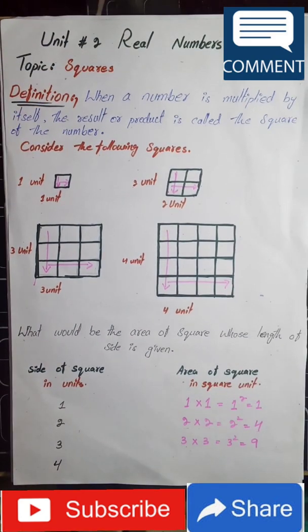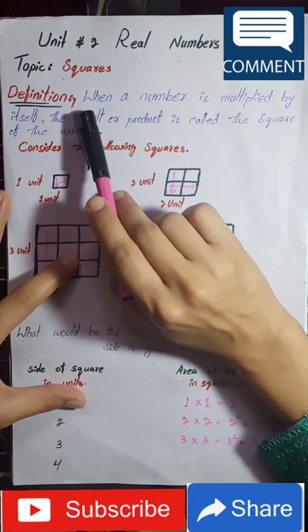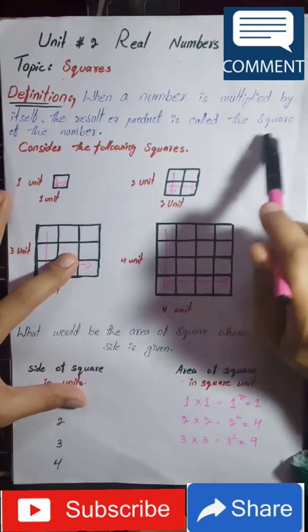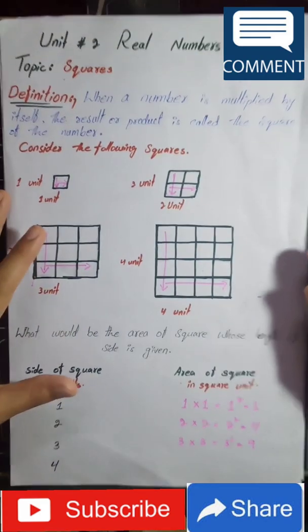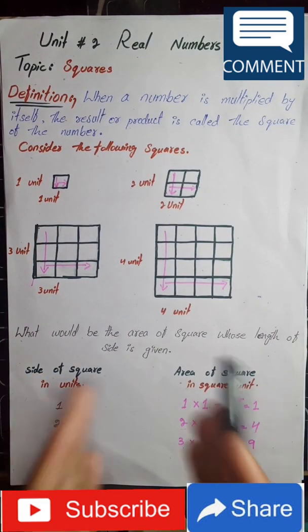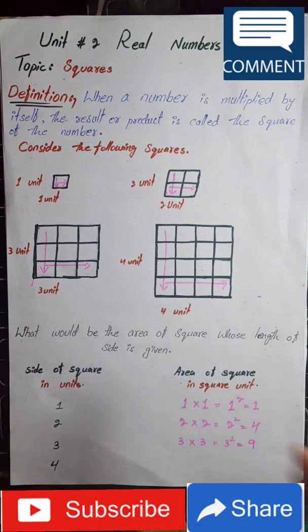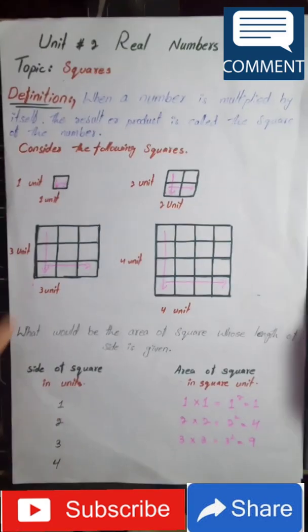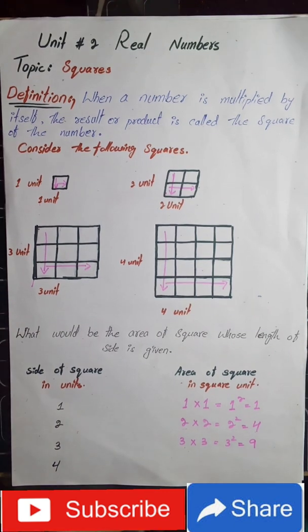What are squares? As defined in our book, when a number is multiplied by itself, the result or product is called the square of that number. For example, two is the number, and we multiply it with itself — two times two — and the result is called the square of two.